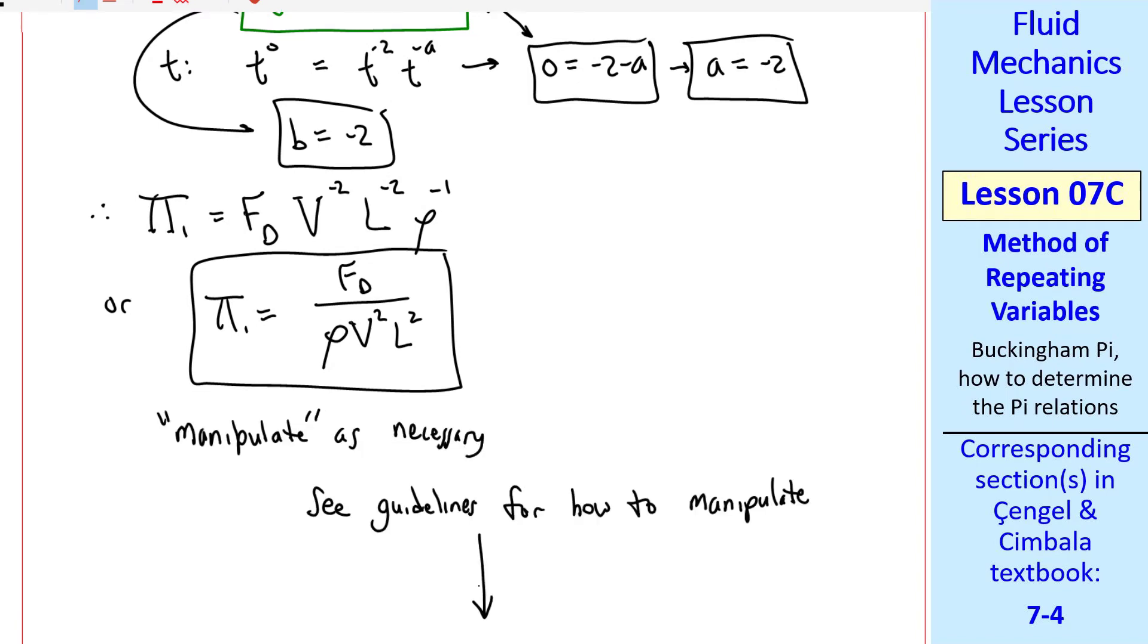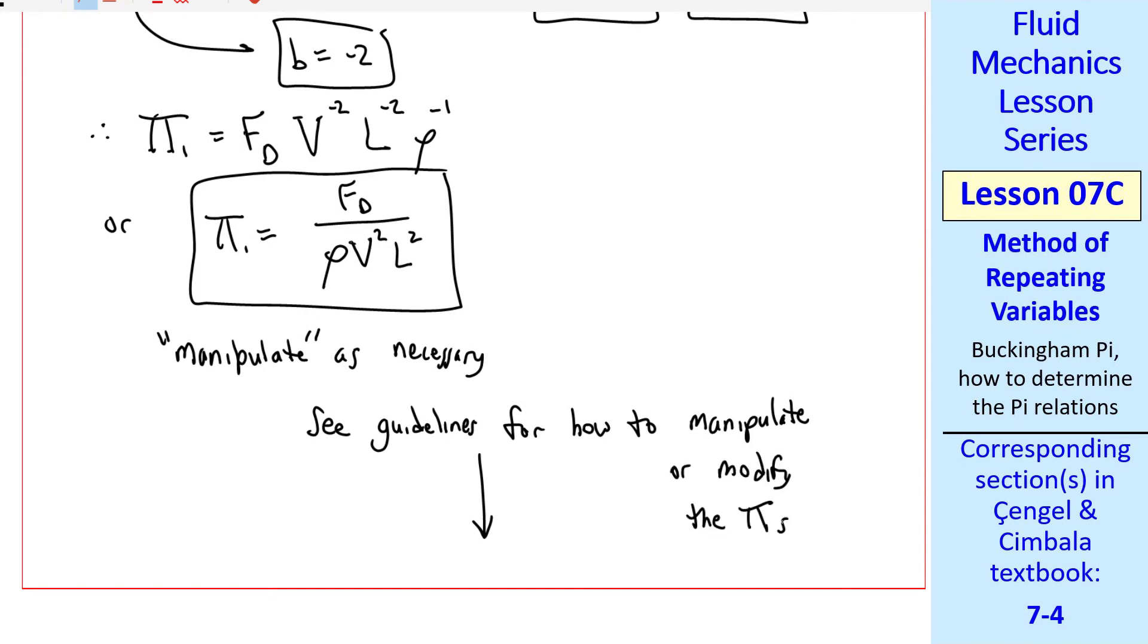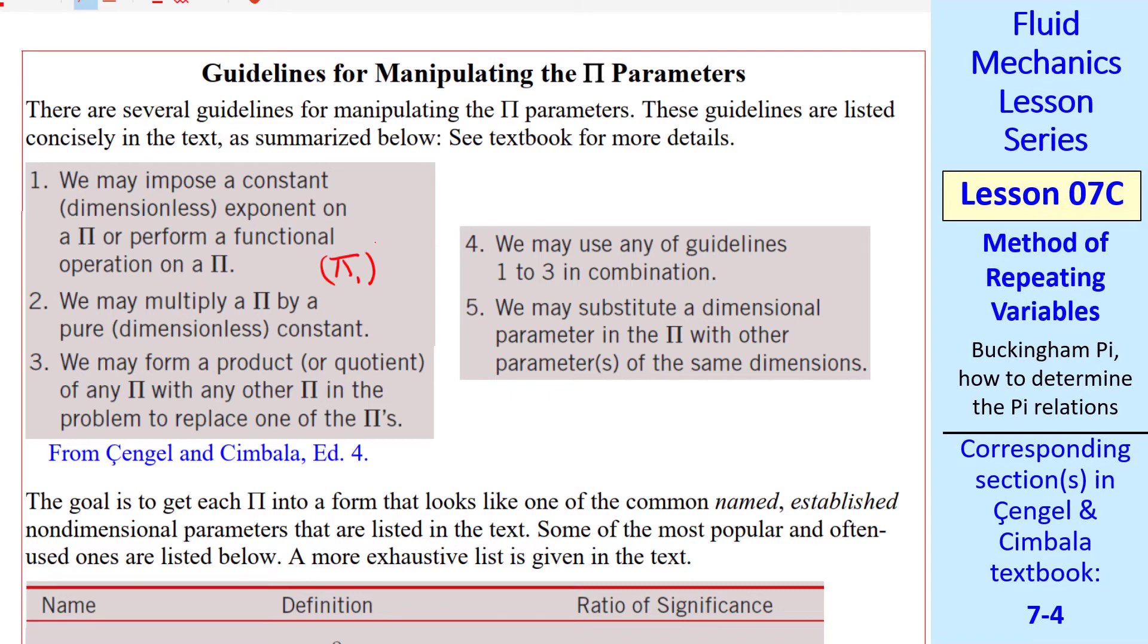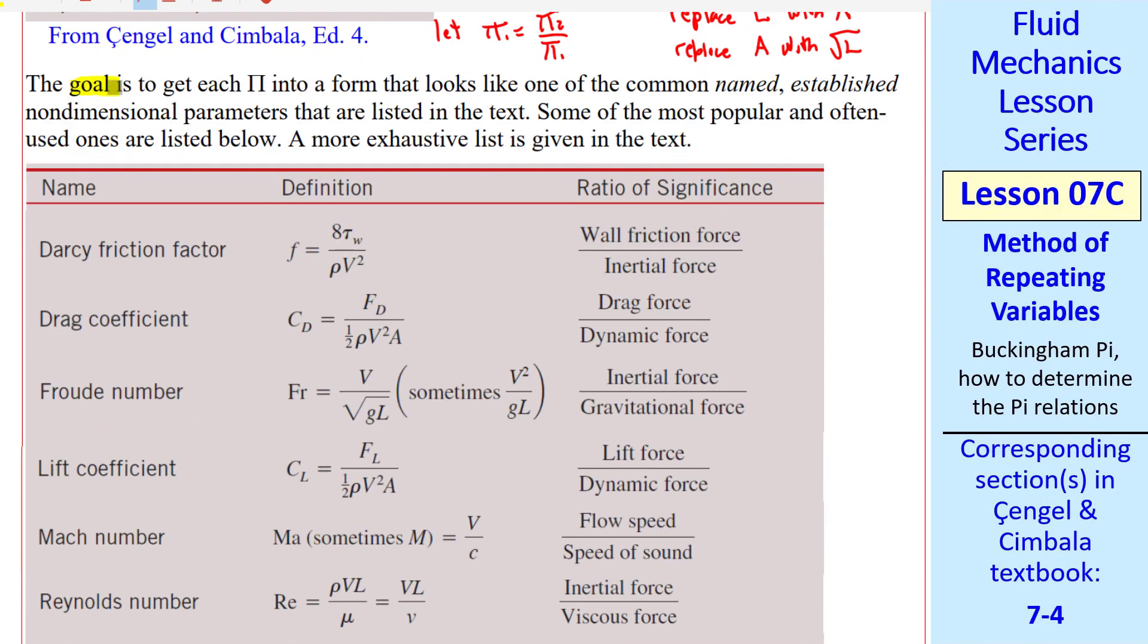I'll show you some guidelines below for how to manipulate or modify the pis. You can impose a constant dimensionless exponent on a pi. For example, you can square it or take the square root. You can multiply a pi by a dimensionless constant. For example, a times pi one where a is some constant. You could form a product or quotient with any pi with another pi. And this will replace one of those pis. For example, if we have two pis, we could let one of them be the ratio of pi two over pi one. And then this one and this one would be our two modified pis. We can do any of these guidelines one to three in combination. I can take this and square it and multiply it by some constant, for example. And finally, we may substitute a dimensional parameter in the pi with other parameters of the same dimensions. For example, replace l squared with an area or replace area with square root of l.